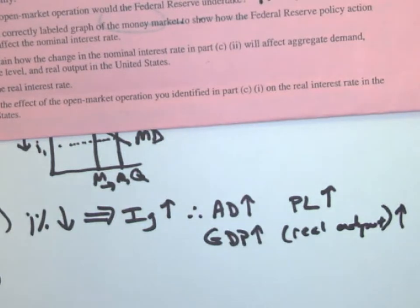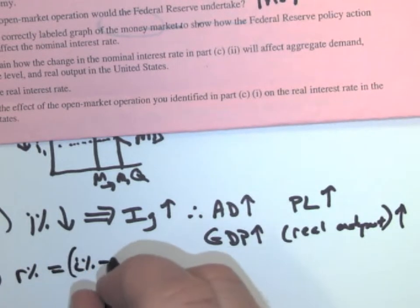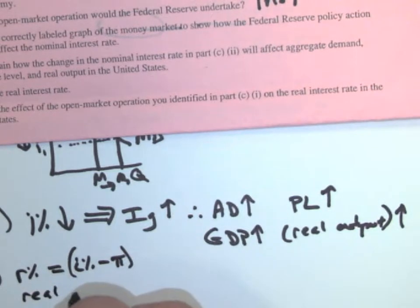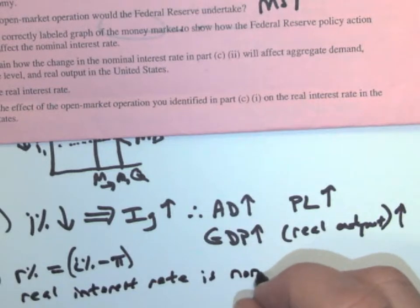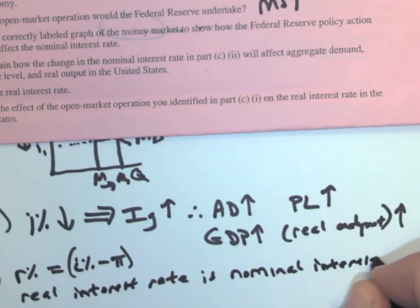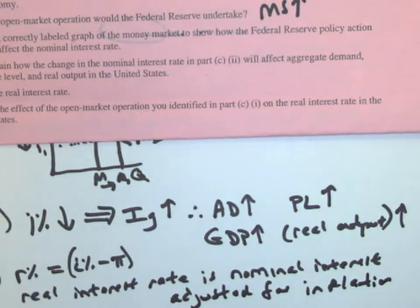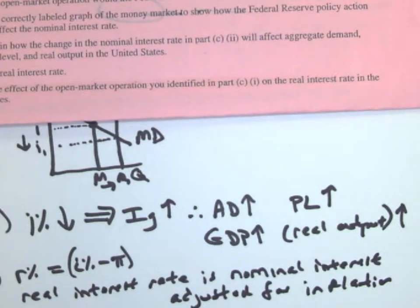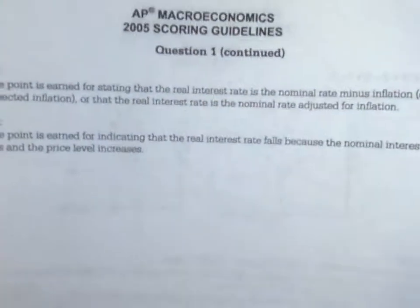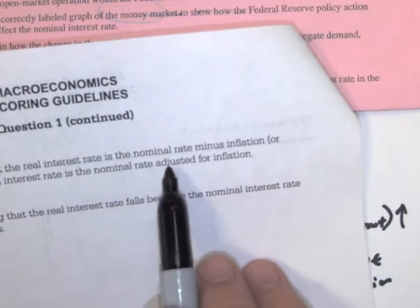Now, part D says define the real interest rate. And what the real interest rate is, remember our formula? Real interest rate equals i nominal interest rate minus pi. So the real interest rate is nominal minus inflation. Nominal interest adjusted for inflation. Now, let's see, how do they define it in College Board? So in part D, let me find how College Board wants it written exactly. Here's how they define it. One point is earned for stating that the real interest rate is the nominal rate minus inflation, or expected inflation, or that the real interest rate is nominal adjusted for inflation. So they give you a couple ways to explain it. So if you said one of those, then you'll be good.